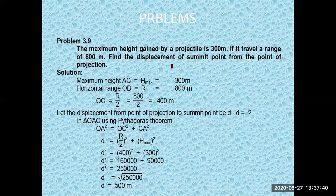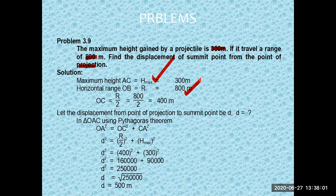The maximum height gained by the projectile is 300 meters and it travels a range of 800 meters. Find the displacement of the summit point from the point of projection. You are given the maximum height and the horizontal range.